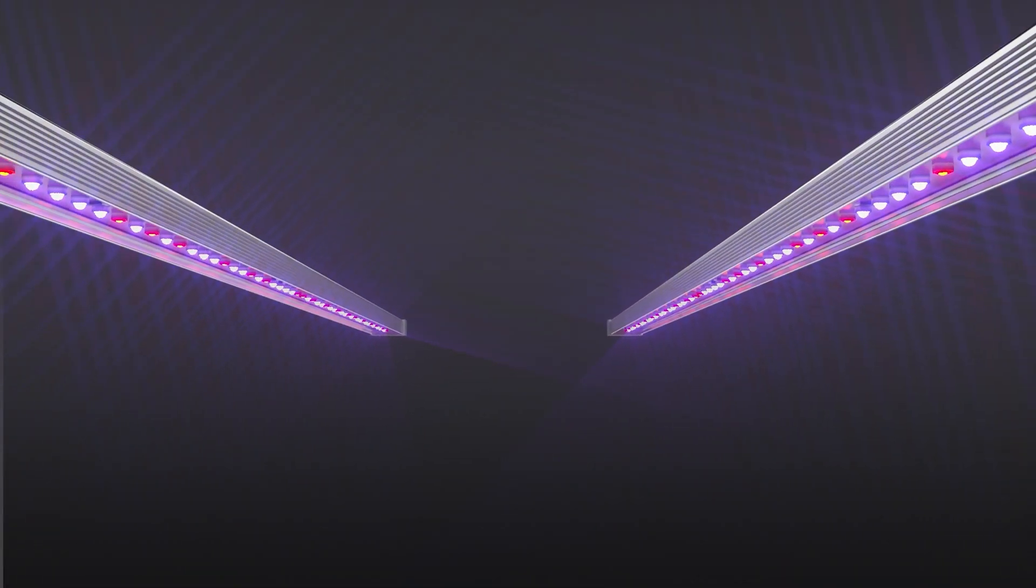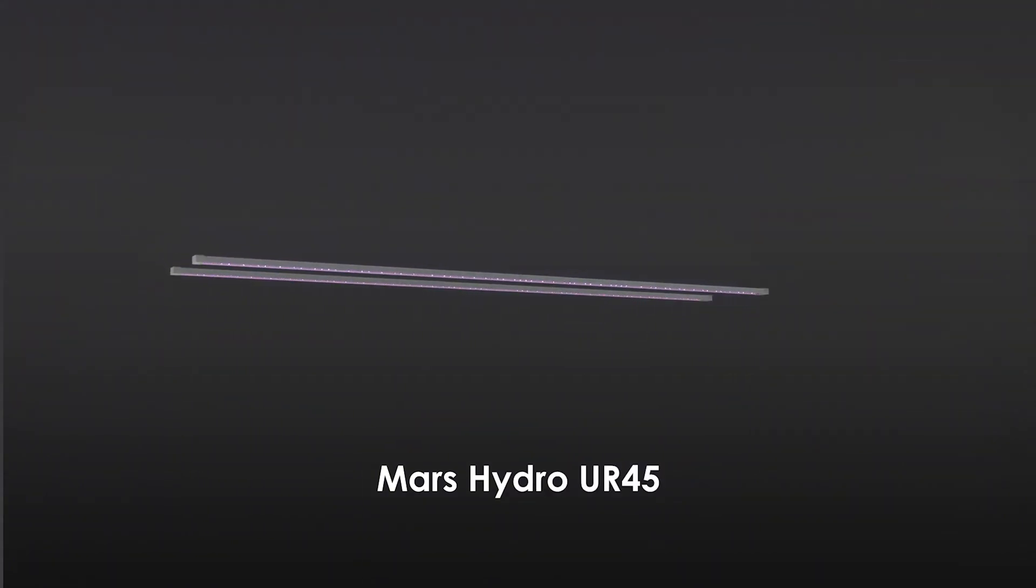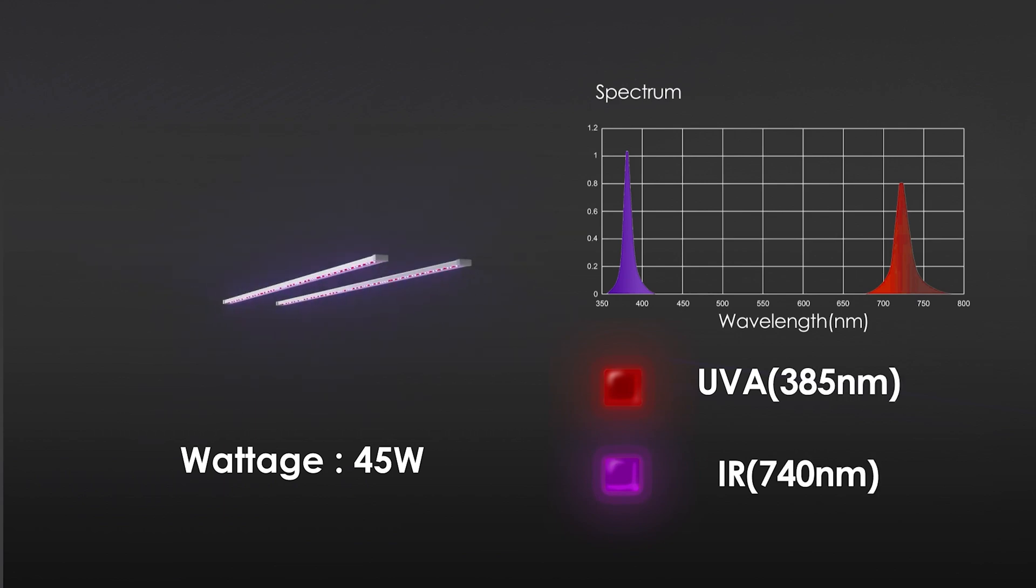Let's discuss the Mars Hydro UR45 supplemental light bar. The UR45 is made up of two separate light bars, which together has a total wattage of 45 watts, and covers the spectrum of UV-A and IR.